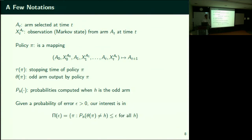Our interest is in all those policies which perform well given a certain probability of error ε. I am interested in policies which at the time of stoppage declare the odd arm with very high probability — the probability of error is at most ε. This has to hold no matter where the odd movie is.